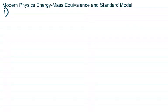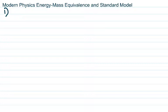Alright, let's get started. Number one from the mass-energy equivalence worksheet. The first question says 1.53 times 10 to the negative 3 universal mass units — what is that in mega electron volts? This seems like, what the heck are they talking about? But you have to remember that the universal mass unit to mega electron volt conversion is on the front page of the reference tables.